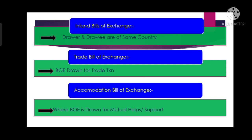Now we will discuss the accommodation bill of exchange. An accommodation bill of exchange is that bill of exchange which is drawn and accepted for mutual help — it does not involve a sale or purchase of any goods and services. It is basically an agreement between two parties for giving financial support to each other. It can be financial or non-financial in nature, and these types of bills are drawn within certain groups.